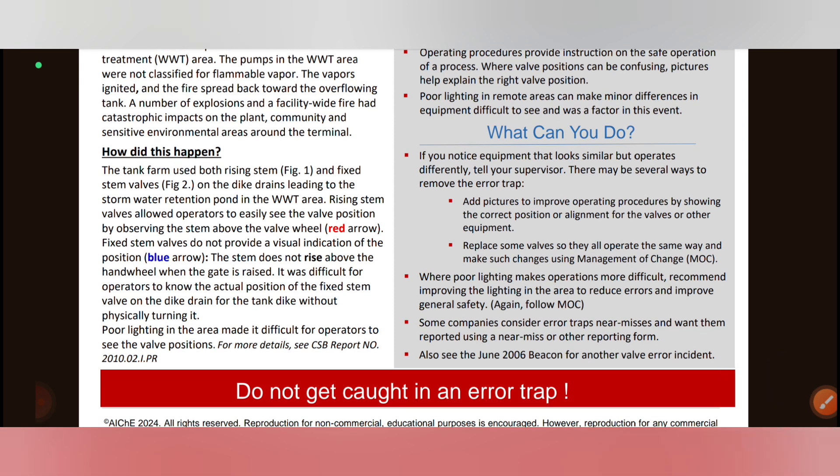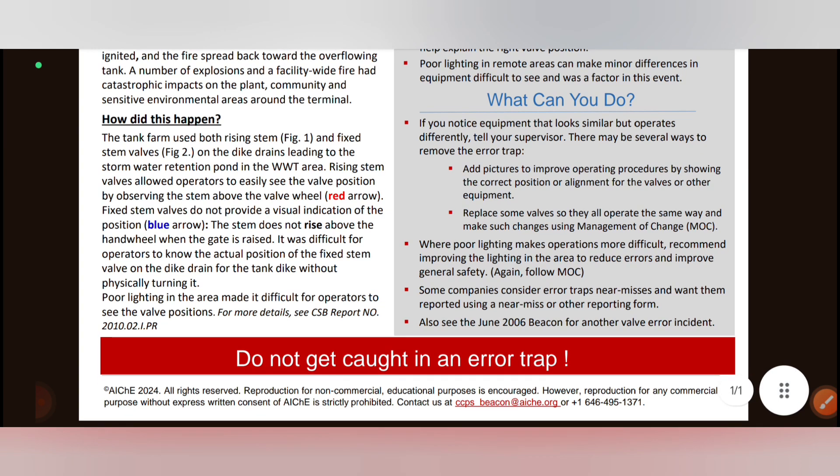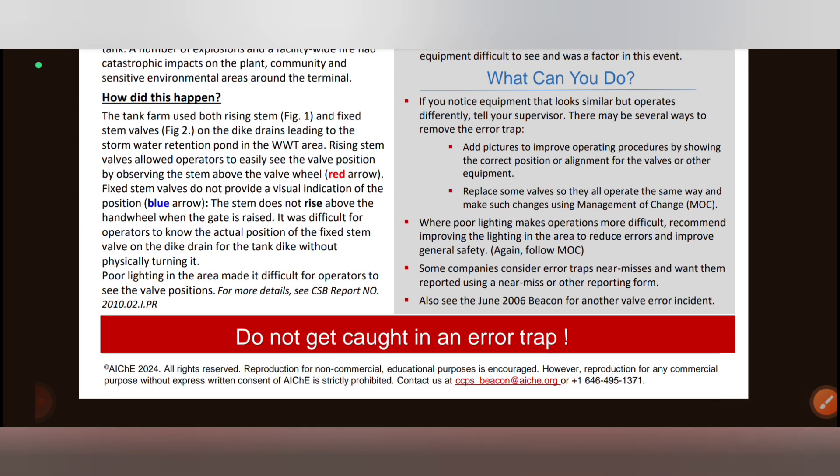In this case, pictorial information and signage showing valve position will make it easy to identify valve status. Consider replacing all non-rising stem valves with rising stem valves if possible. Lighting should always be improved. There should be general safety company meetings to discuss these issues. Good lighting reduces mistakes. And some companies encourage reporting near-miss incidents.